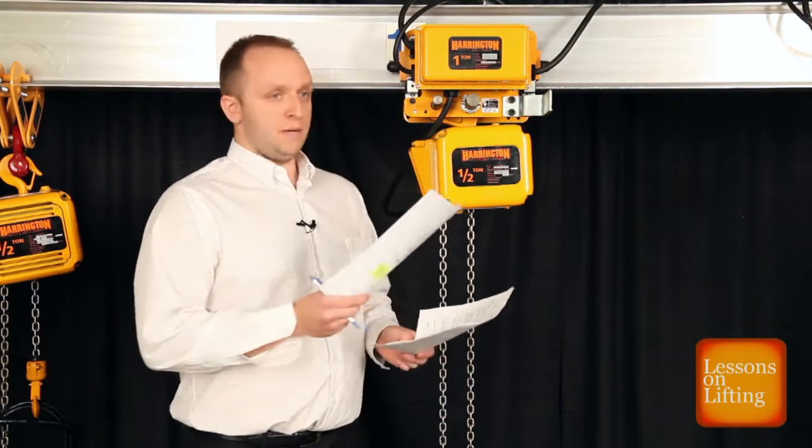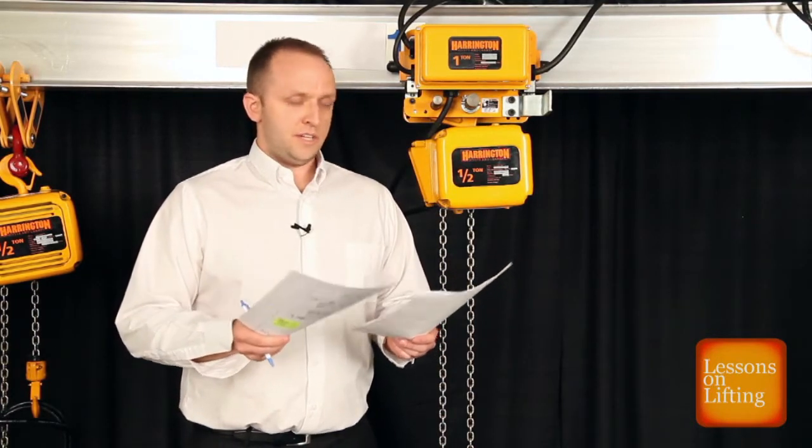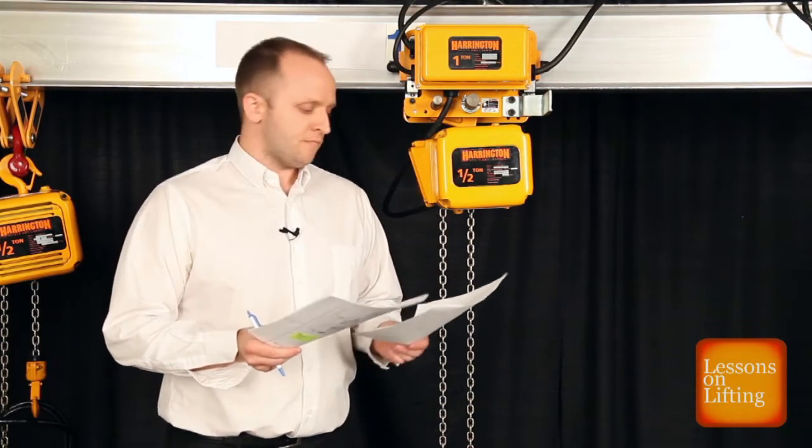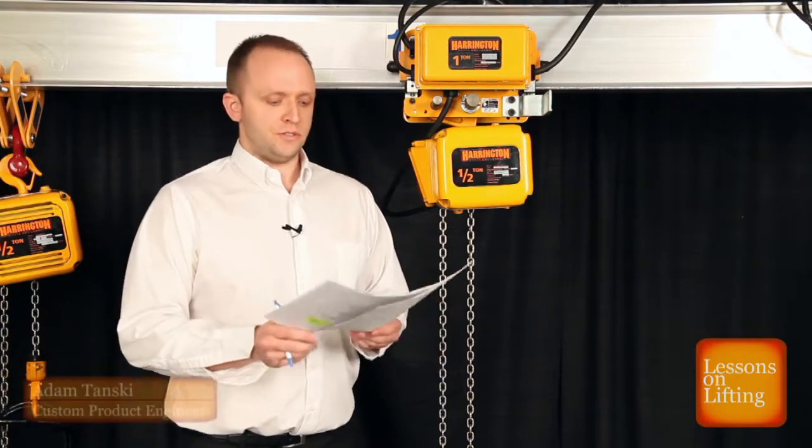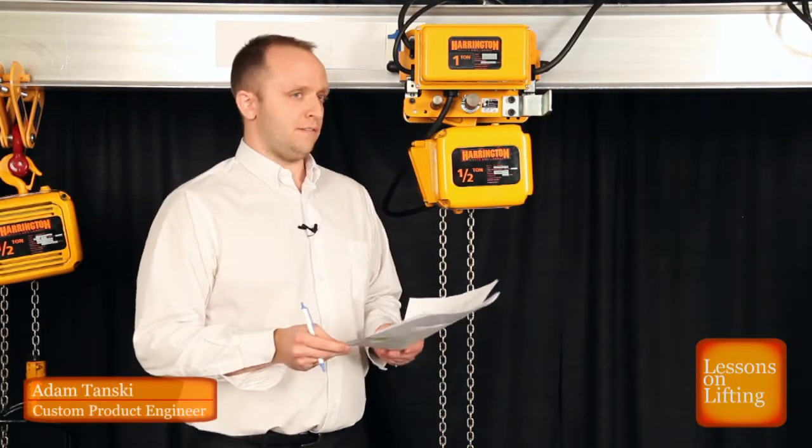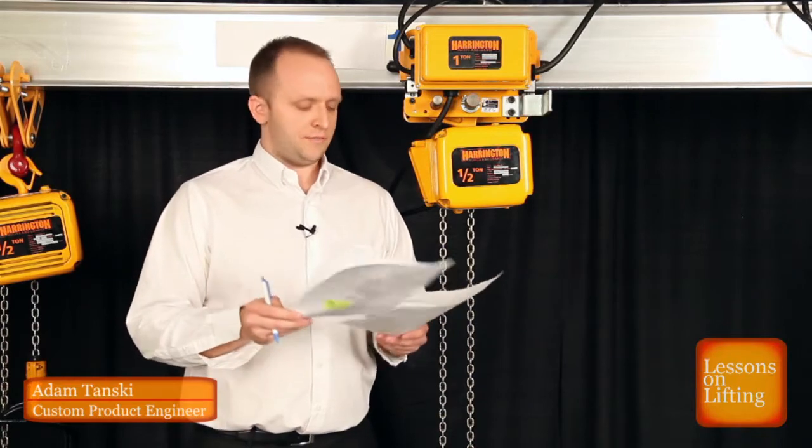For ER2, MR2, you're going to refer to either 71,000, that drawing number, if you're dealing with a hoist only. 71,002 is the drawing you're going to deal with if you have a trolley and hoist configuration, which is what we have here. So we'll be using drawing 71,002.